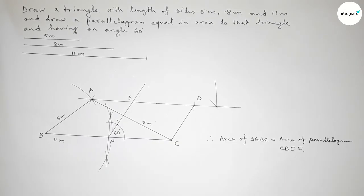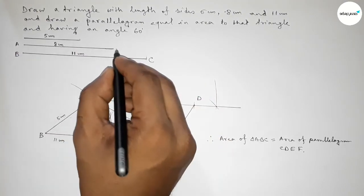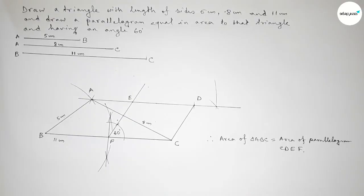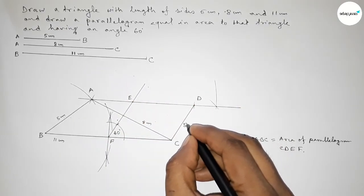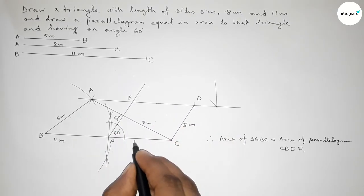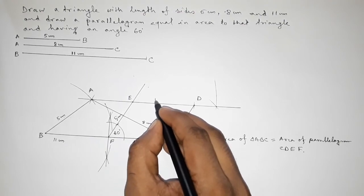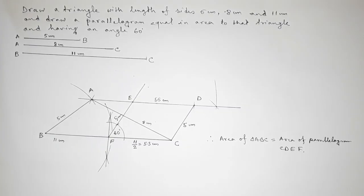Therefore, the area of triangle ABC equals the area of parallelogram CDEF. BC is 11 centimeter, AC is 8 centimeter, AB is 5 centimeter. This side equals 5 centimeter, and since F is the midpoint of BC, FC equals 11 divided by 2, which is 5.5 centimeter. So we have successfully constructed parallelogram CDEF. Thanks for watching — if this video was helpful, please share it with your friends.